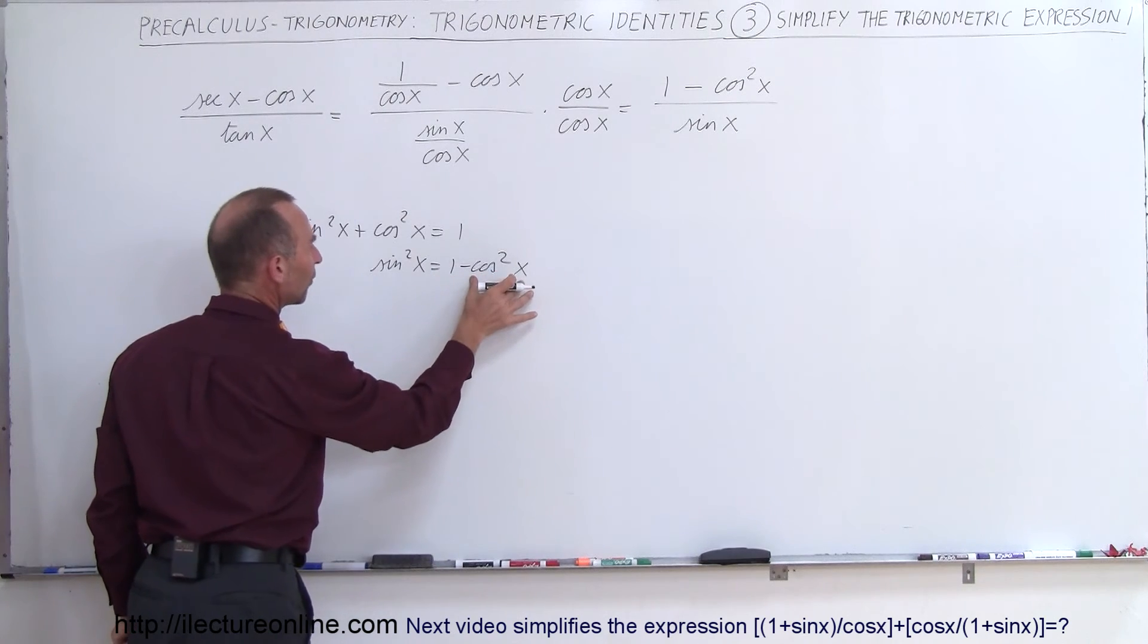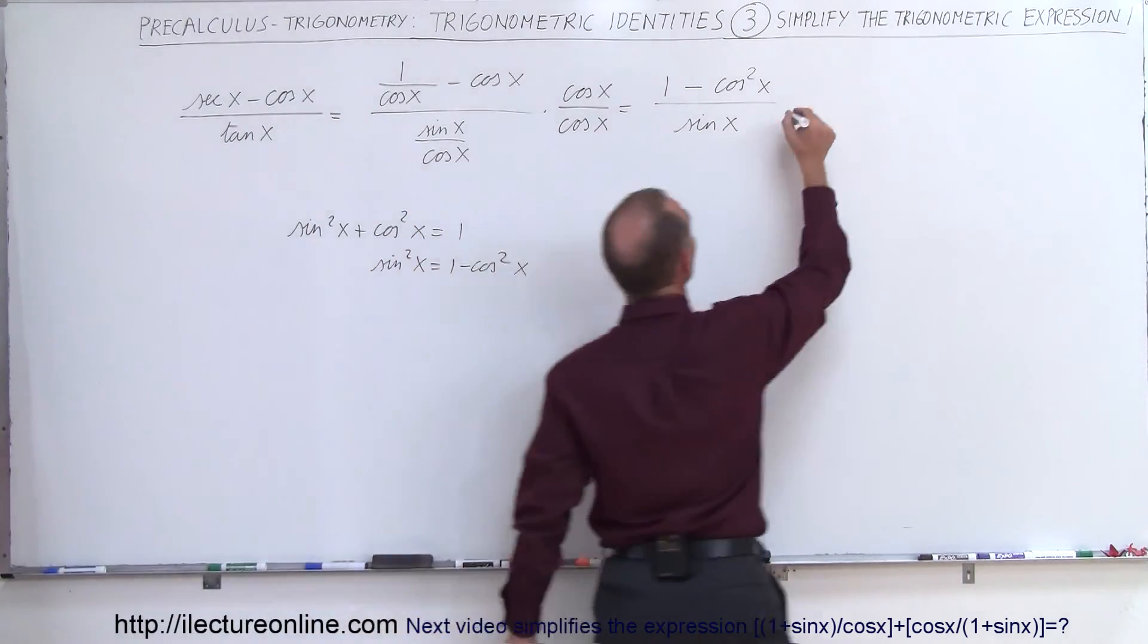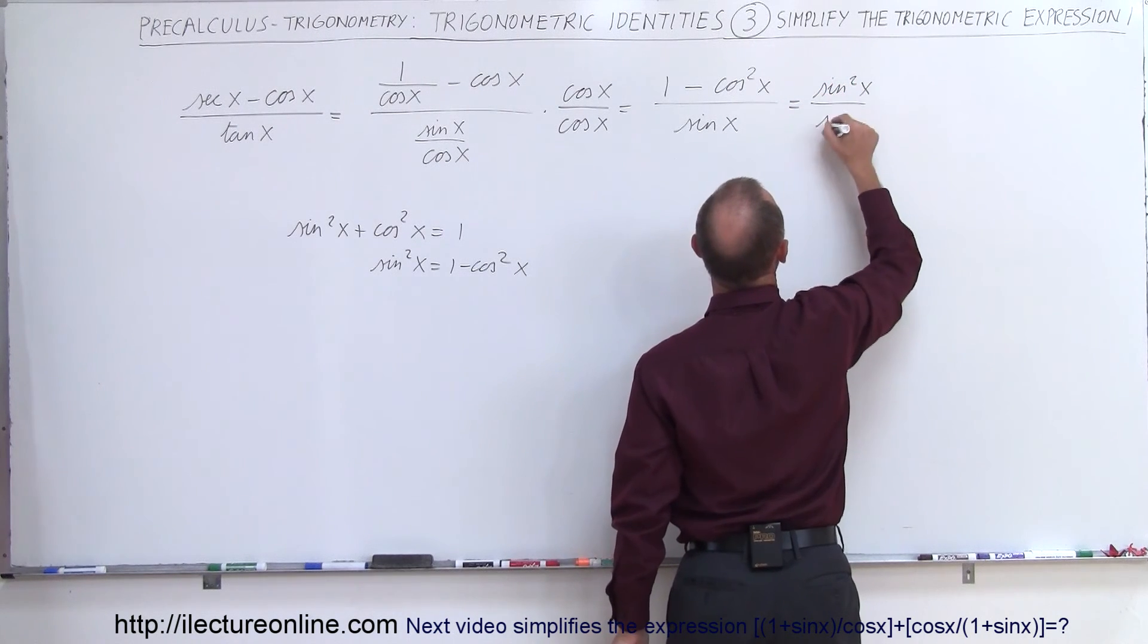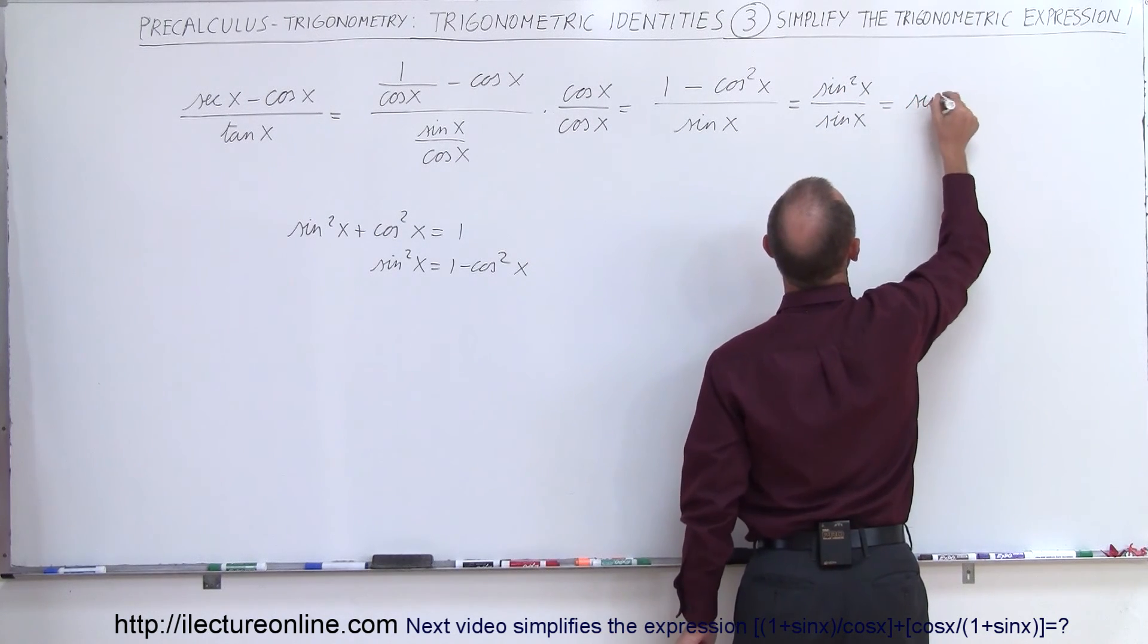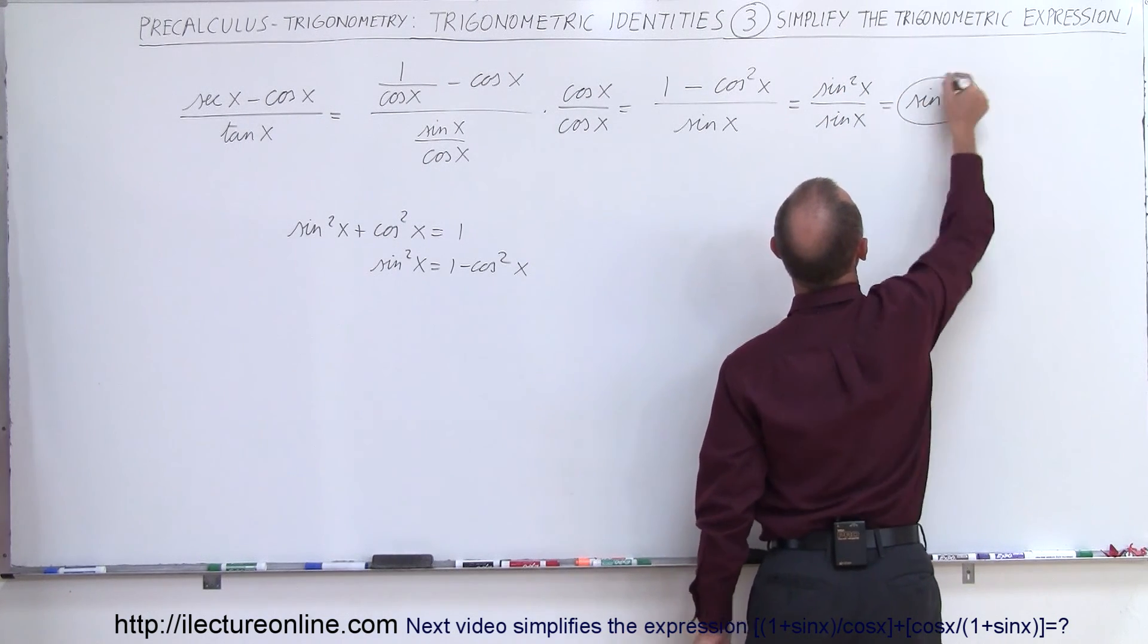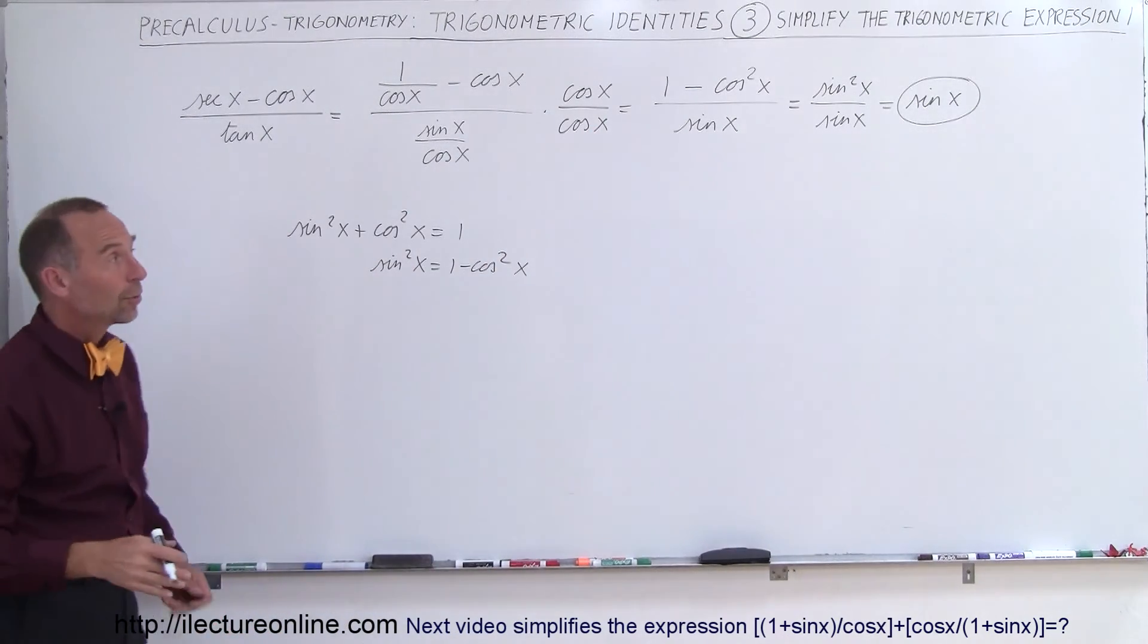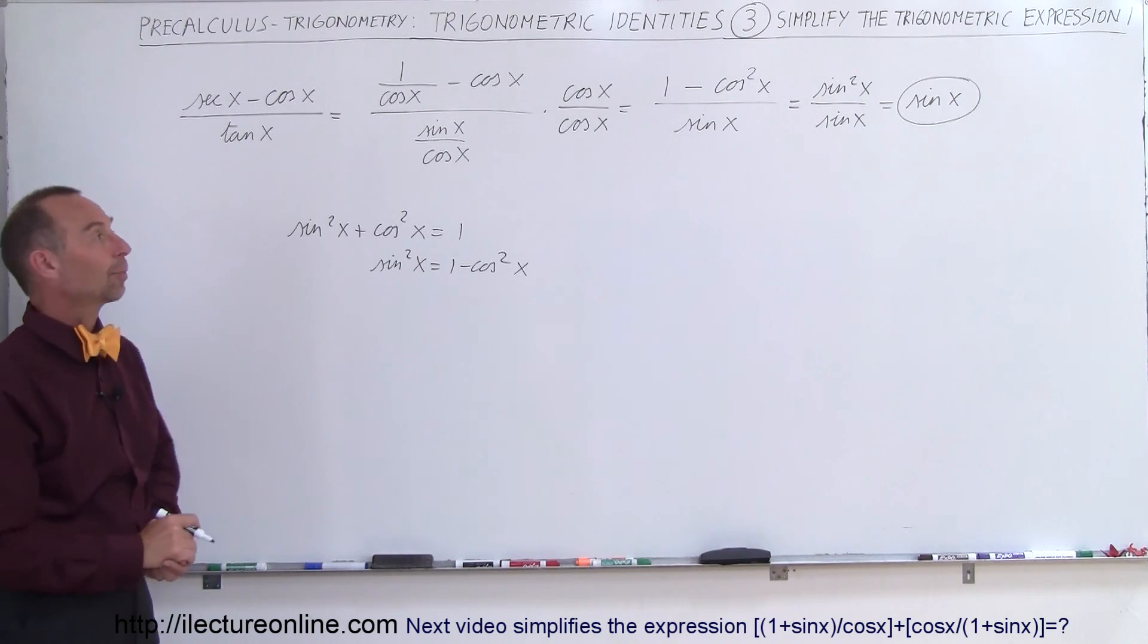So 1 minus the cosine squared of x can be written as the sine squared of x which we will do up there. So this can be written as the sine squared of x divided by the sine of x. And of course this divides into that and you simply end up with the sine of x which is a simplified form of this original expression. And so that's how we use these basic identities to simplify trigonometric expressions.